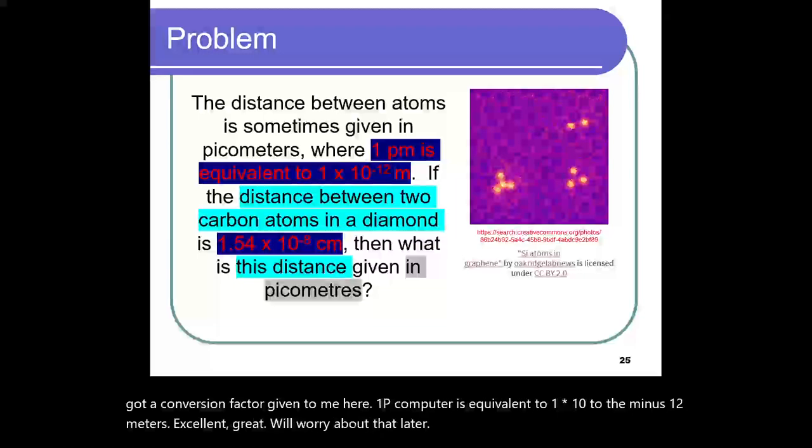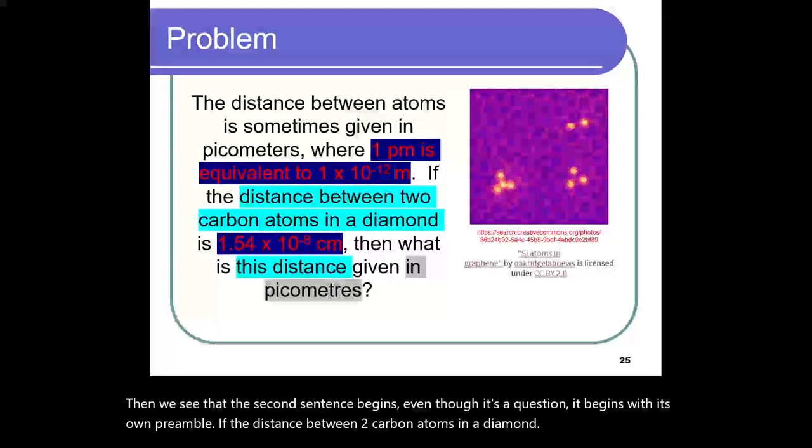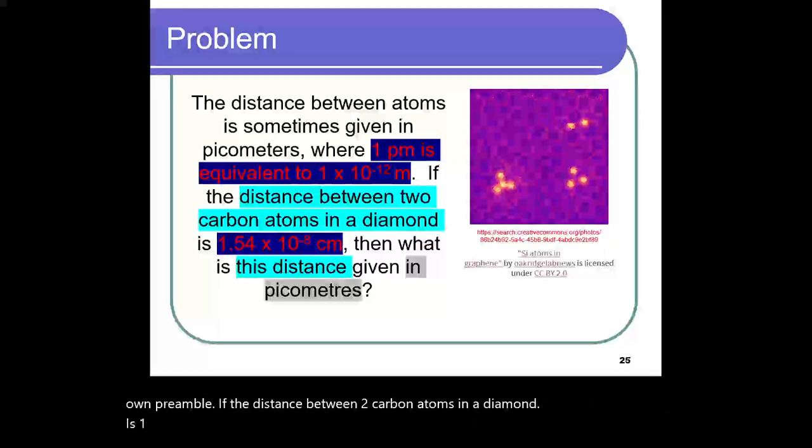Then, we see that the second sentence begins, even though it's a question. It begins with its own preamble. If the distance between two carbon atoms in a diamond is 1.54 times 10 to the minus 8 centimeters,